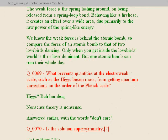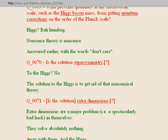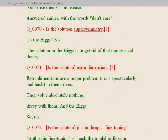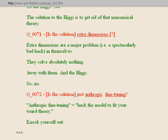Question seventy: is the solution supersymmetry? No — the solution to the Higgs is to get rid of that nonsensical theory. Is the solution extra dimensions? Extra dimensions solve absolutely nothing — away with them, and the Higgs. Question seventy-two: is the solution just anthropic fine-tuning? Anthropic fine-tuning equals hacking the model to fit your weird theory. Next section: magnetic monopoles. Question seventy-three: did particles that carry magnetic charge exist in some past high-energy epoch? No — Spring-in-Loop Theory says magnetism is a propagated effect that would not have changed since shortly after a big bang, if such a thing occurred. Question seventy-four: do any remain today? Only in the mind of physicists.